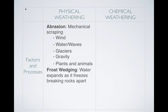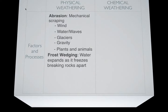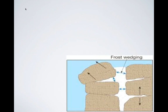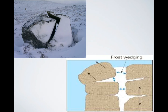Next up, let's look at frost wedging. Frost wedging is when water expands as it freezes and breaks rocks into smaller pieces. Here's a little diagram: when it's not freezing outside, water gets into all these little crevices. But when it gets cold, that water expands — that's why ice floats. As it expands, it starts to break apart the rock from the inside, and you get giant rocks that have been split apart by frost wedging.